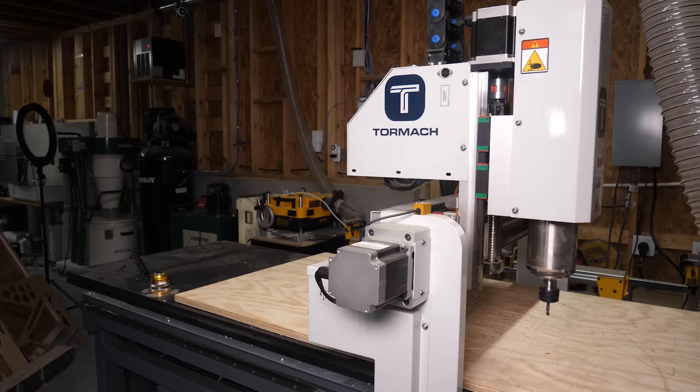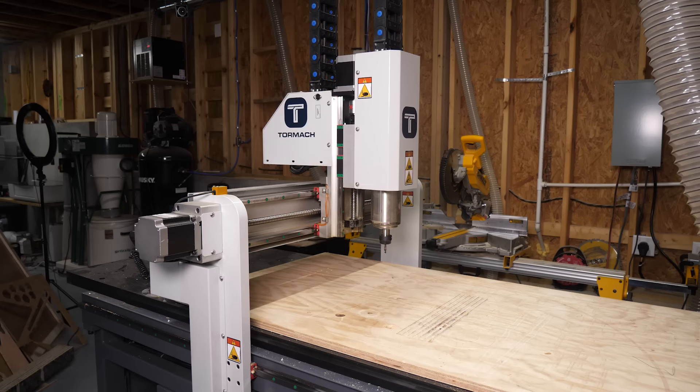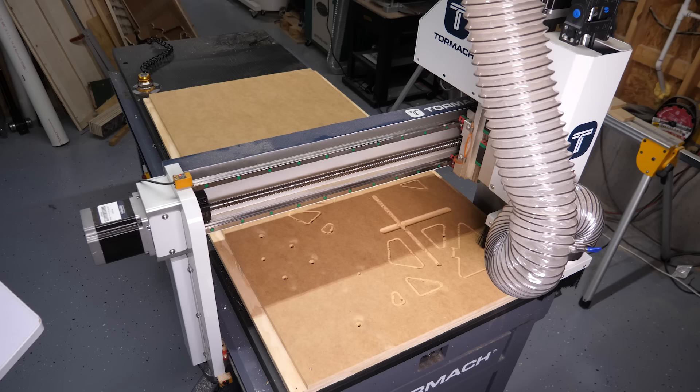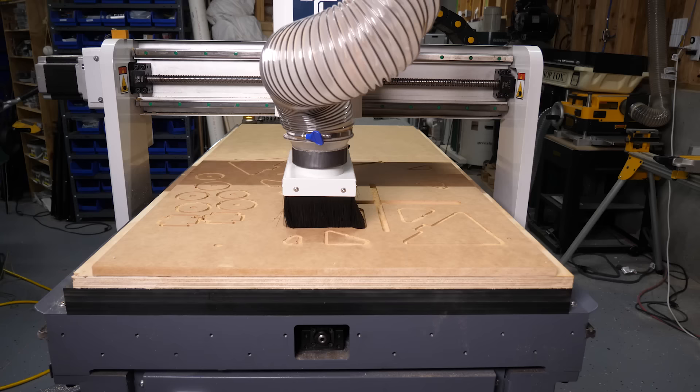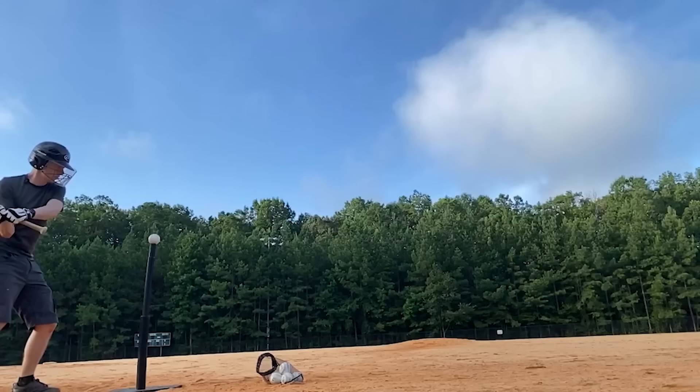All right, next up, we're going to be looking at the CNC router. It's a Tormach 24R. It's basically a wood router attached to a robot that can move it around to cut out whatever shape you want. It's really good at making big things out of sheets. It cuts up to 2x4 feet. I use it to make all kinds of more precise wood stuff, and especially explosive bats.